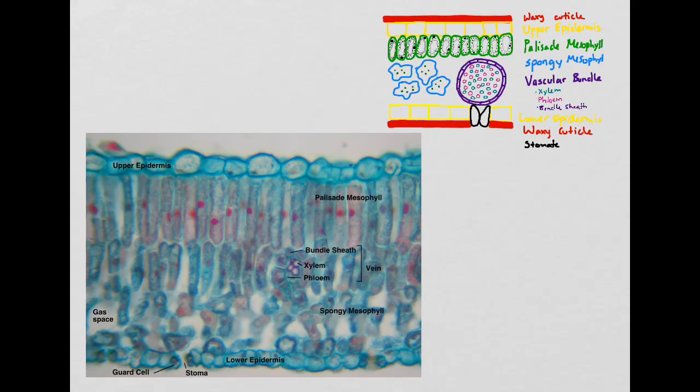Here you can see what the leaf actually looks like if you took a cross section and examined it under the microscope after giving it a little dye. The waxy cuticle is very hard to see because it's so thin, but if you look at the area circled in red, you can see a little hint of it.